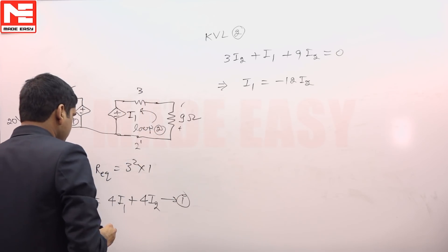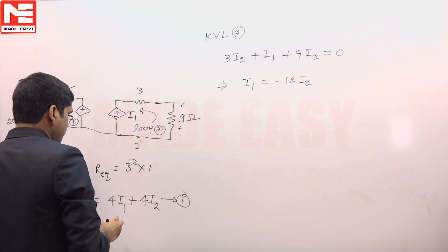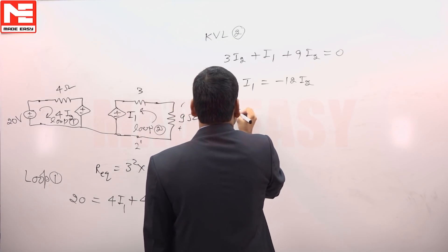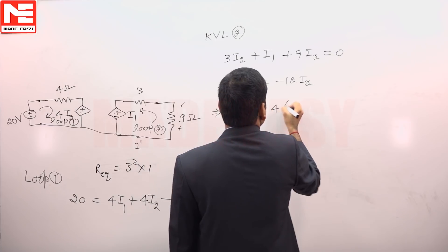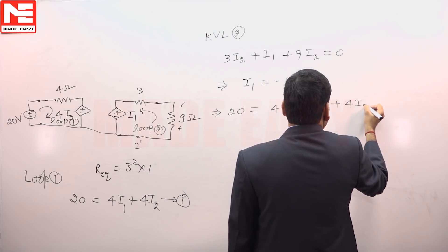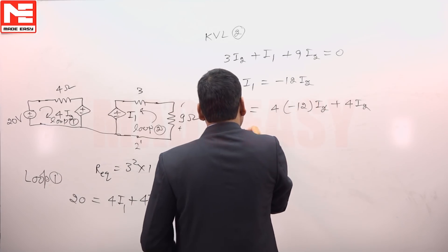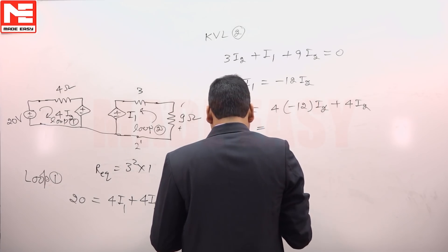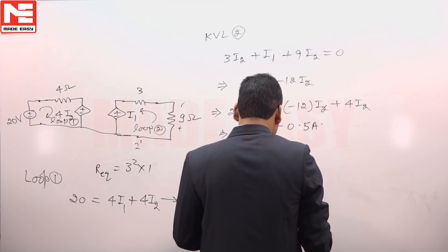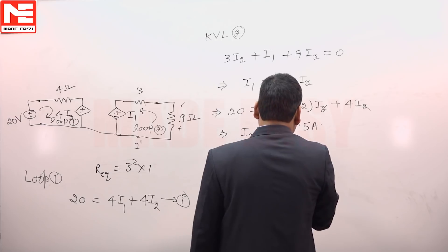By putting this value we can get the value of I1 and I2. From equation 1, if we put the value of I1, so 20 is equal to 4 into minus 12 I2 plus 4 I2. On solving, I2 is equal to minus 0.5 ampere, so I1 will be equal to plus 6 ampere.